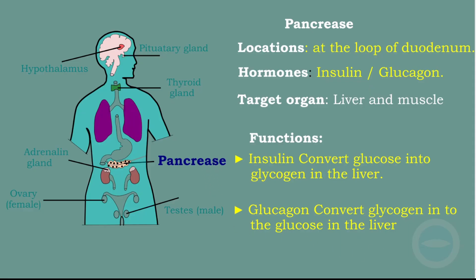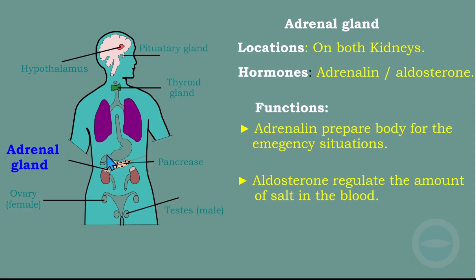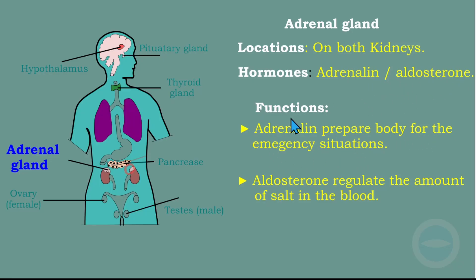Another gland is the adrenal gland. The adrenal gland is located on top of each kidney. The hormones are adrenaline and aldosterone. The function of adrenaline is to prepare the body for emergency situations. The function of aldosterone is to regulate the amount of salt in the blood. Both are secreted by the adrenal gland.